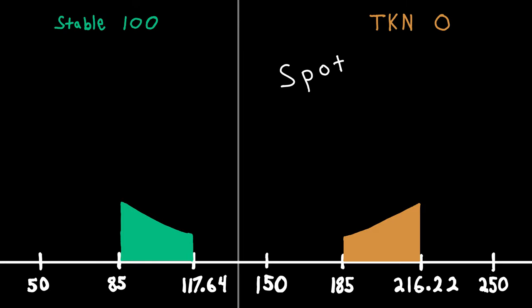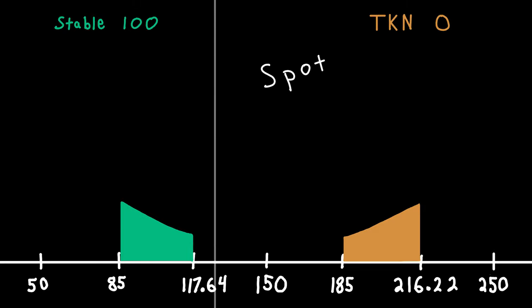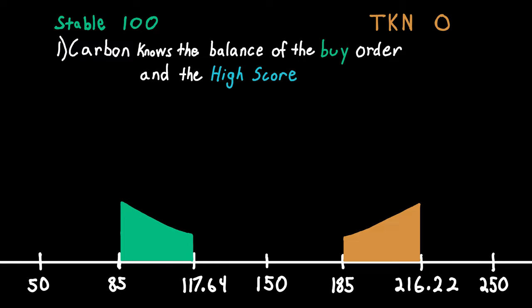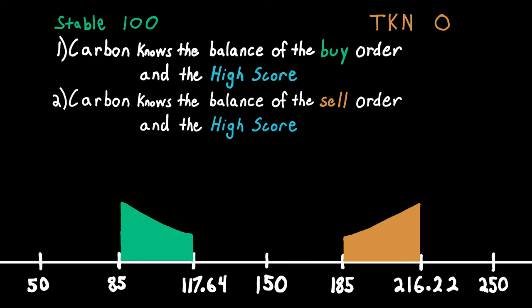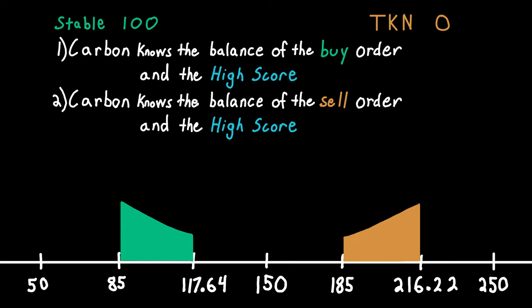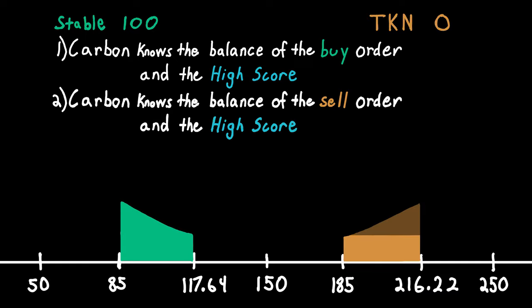The way the trader interacts with this strategy follows six rules. Carbon knows the balance of the buy order and the high score. Carbon knows there is 100 stable in the buy range and the high score is 100. Carbon knows the balance of the sell order and the high score. Carbon knows the sell range is empty and the high score is zero.